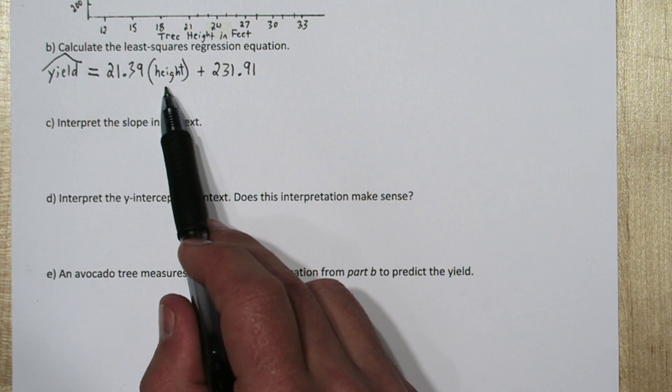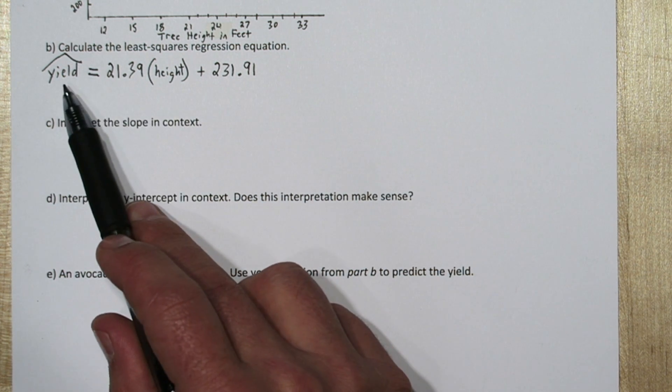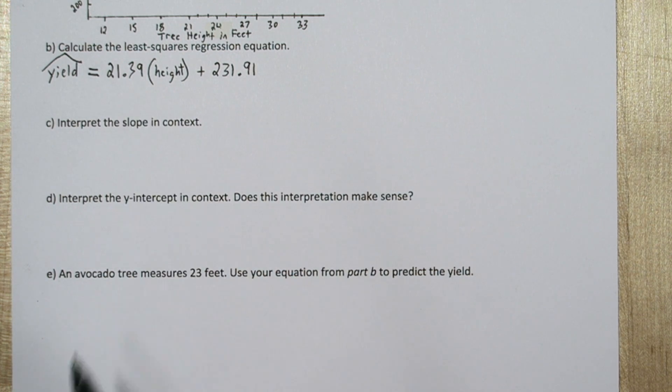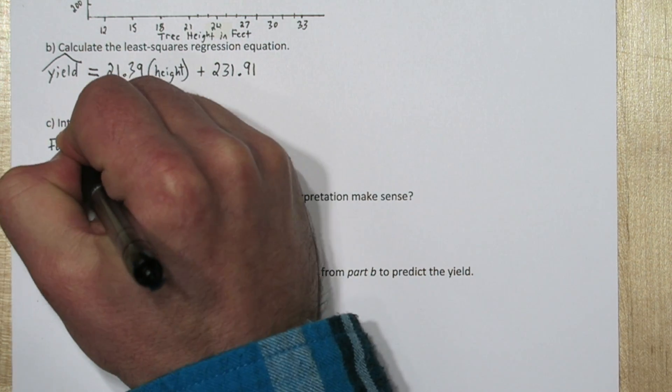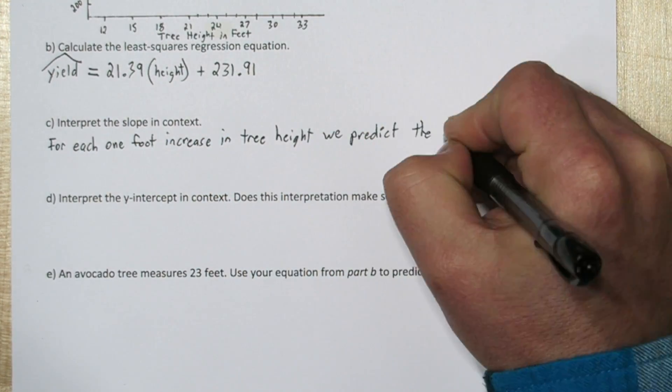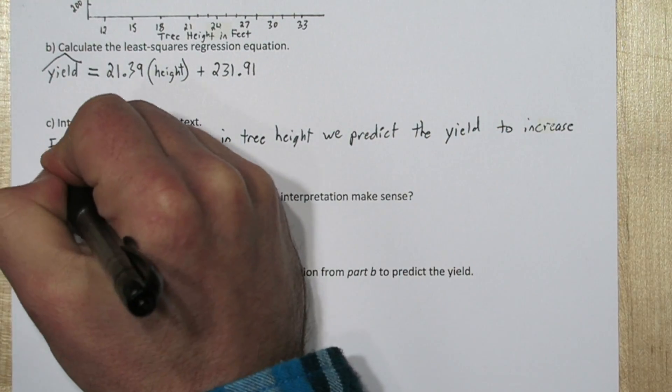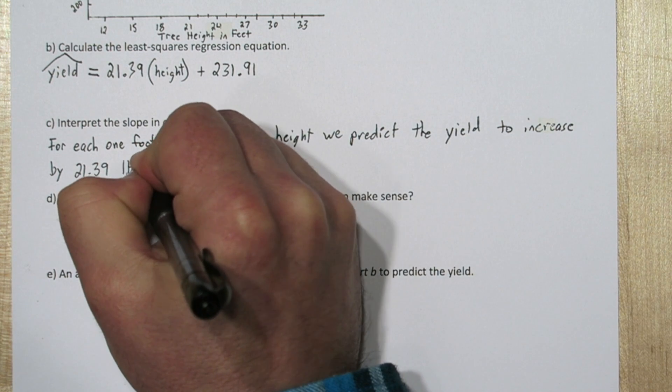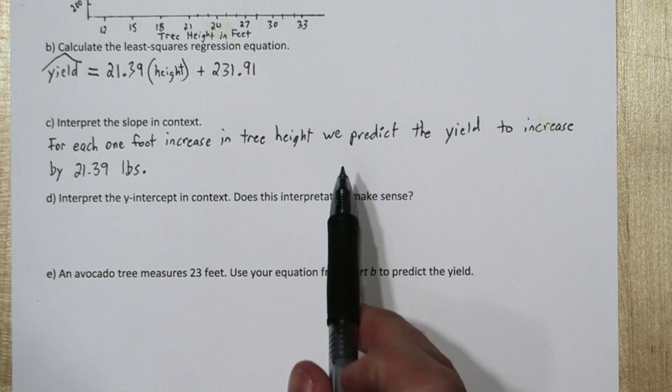So let's interpret this slope. Each time the height increases by 1 foot, we expect our overall yield to increase by 21.39 pounds. So we can say for each 1 foot increase in tree height, we predict the yield to increase by 21.39 pounds.